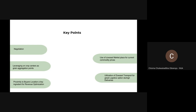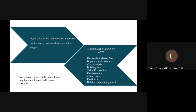I'll dive straight to the first key point, which is negotiation. From the definition, negotiation is a phenomenon where two or more parties agree on terms that meet their specific needs. There are key points we need to know during negotiation: research and market trends — you need to know about market trends, which is why our marketplace is there to give you that information. Buyer specification — our marketplace also gives you an avenue to know the buyer's benchmark, which includes their specifications. Cost analysis — we have a calculator that will help you know how to cover all costs and maximize profits on every delivery.